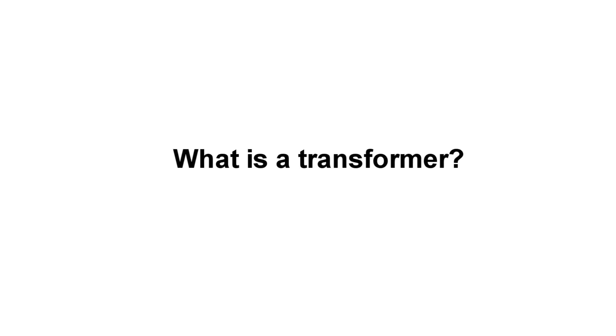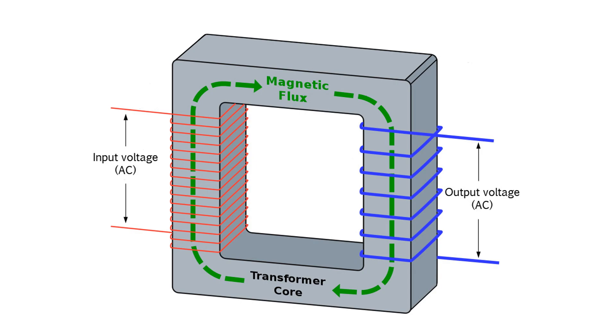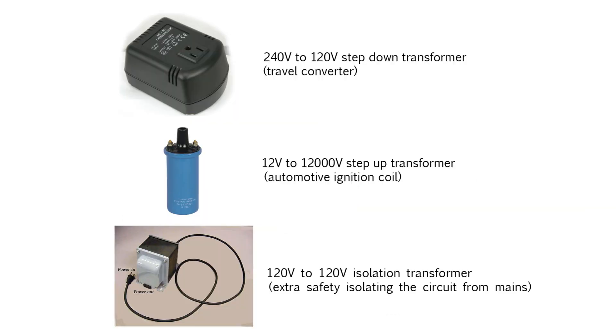So what is an electrical transformer? A transformer is a device that takes electricity, turns it into a magnetic field, then turns it back into electricity again. Depending on how the transformer is designed, you can use them to step up voltages, step down voltages, or even keep the voltages the same if all you want is electrical isolation from your wall outlet. So basically transformers help you get from one voltage to another.